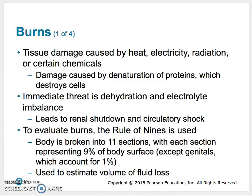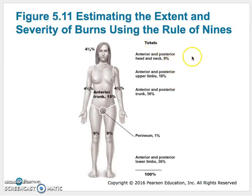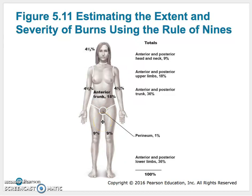There's a thing called the Rule of Nines that's used to evaluate the amount of someone's body that has been burned. Essentially the body is broken down into 11 sections, and each section is counted as 9% of the body. It's important because you need to get an estimate for how much fluid has been lost when somebody is entering the ER. Each leg is 9%, the arms together are 9%, anterior and posterior trunk, head and neck — 9% each — and then the genitals are 1%. You add it all up and get 100%.